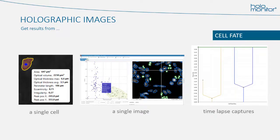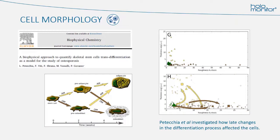The cell tracking can also give us information about the cell fate — what happens to the cell. In this case, the cell divides once. It can also show if cells are dying, and it can build family trees. So, what do people use this technology for?